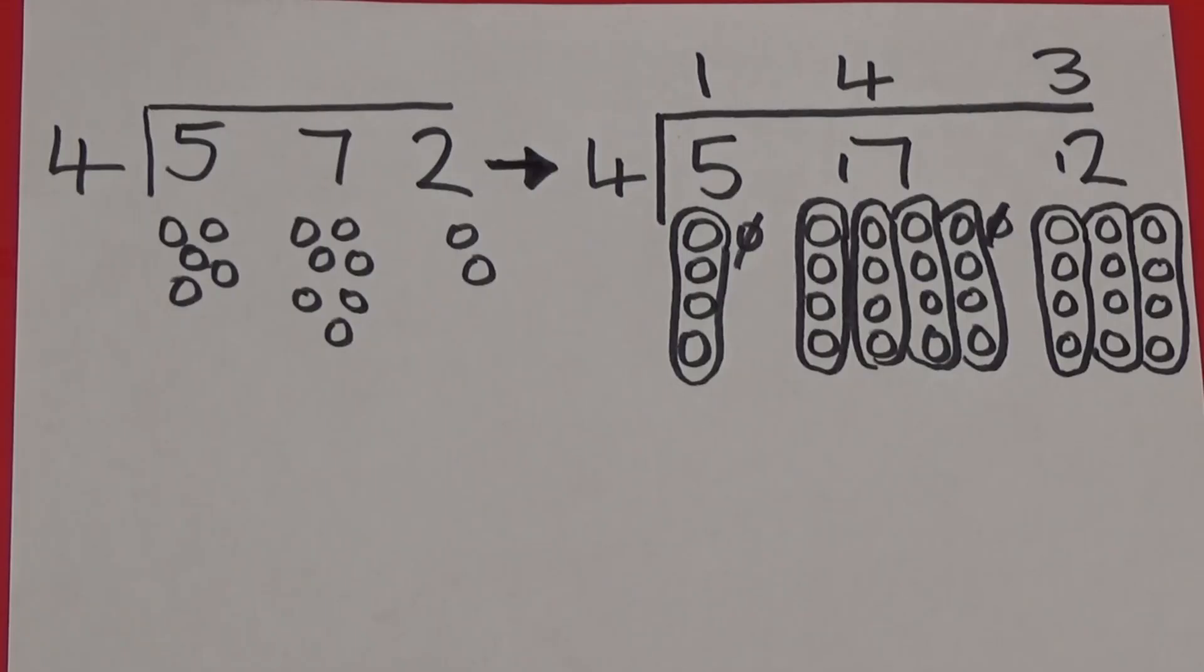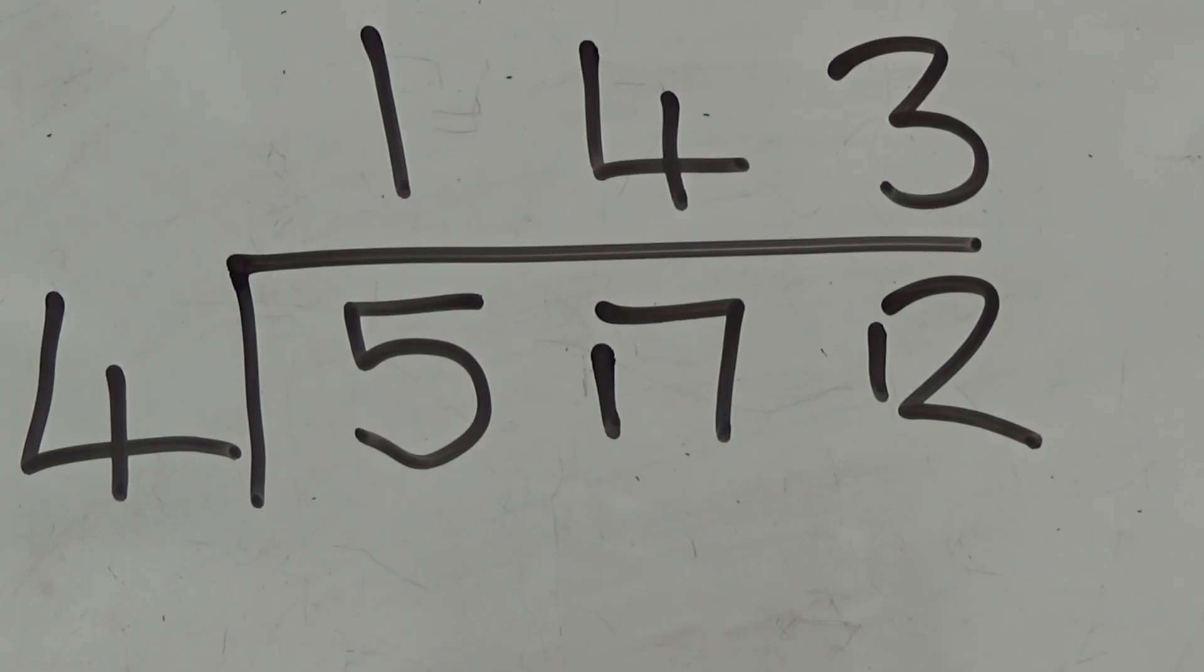Once we can do this with place value counters we can record it as a picture. Finally we can record it without the place value counters.